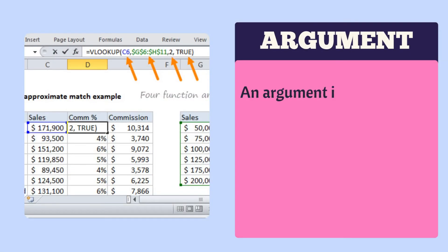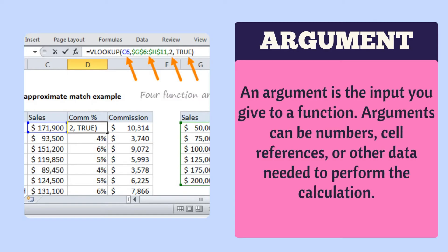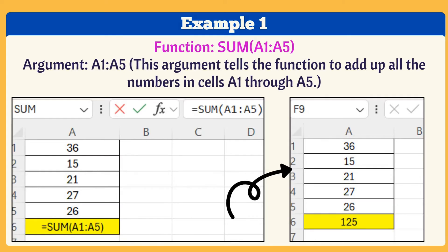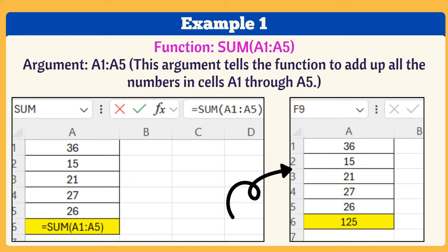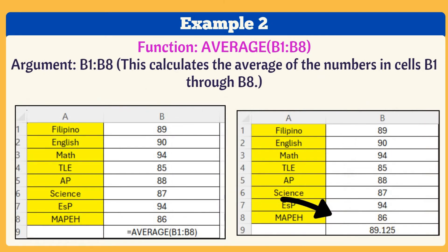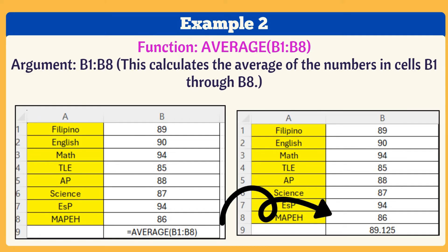An argument is the input you give to a function. Arguments can be numbers, cell references, or other data needed to perform the calculation. For example, the SUM function with the argument A1 to A5 adds up all the numbers in cells A1 through A5. In another example, the AVERAGE function with argument B1 to B8 calculates the average of the numbers in cells B1 through B8.